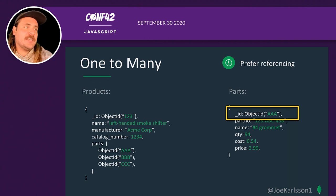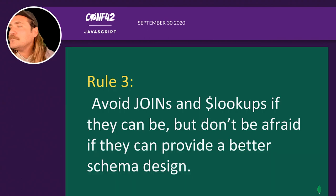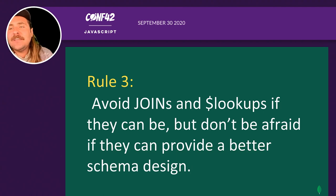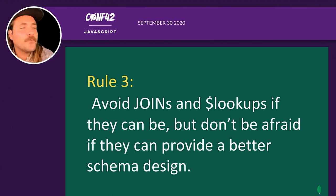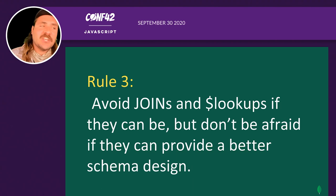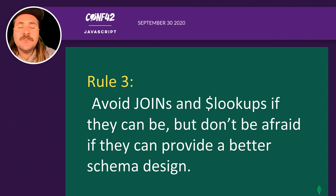We're going to prefer referencing for one-to-many, especially when you're hitting thousands and thousands of sub-items. Rule three: avoid joins and lookups if you can, but joins are not an anti-pattern. If you have a better schema because it includes a reference, go for it. I prefer embedding, but if I can justify a reason to split it up and use joins and lookups, great — it depends entirely on what you are building.